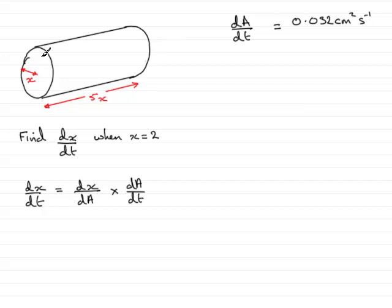Well what we know is that the area of the cross section, being a circle, is given by the area of a circle which is pi r squared. In this case the radius is x, that's pi x squared.